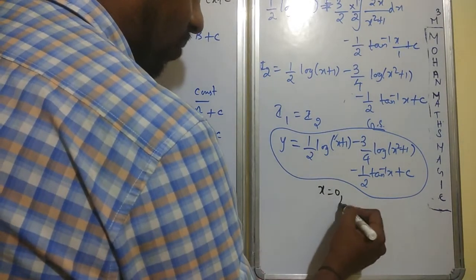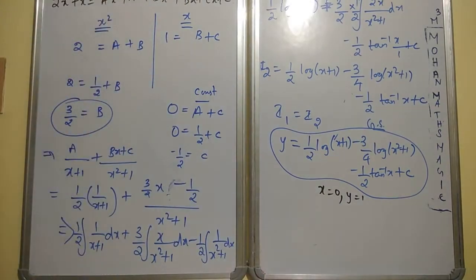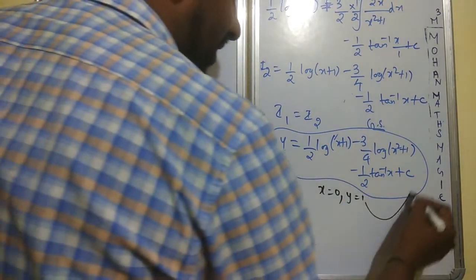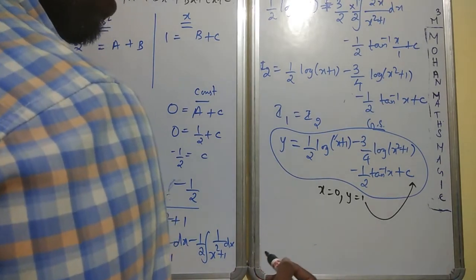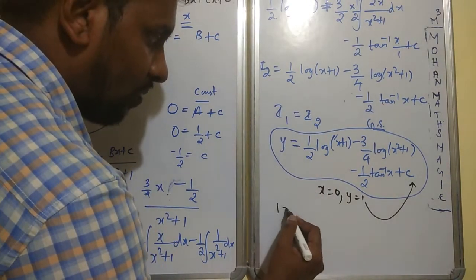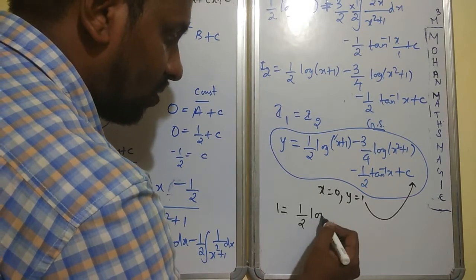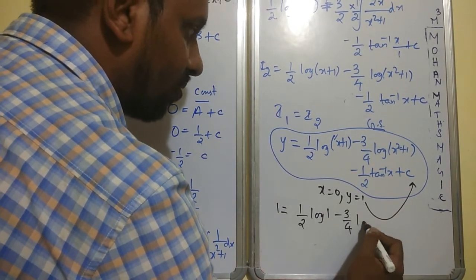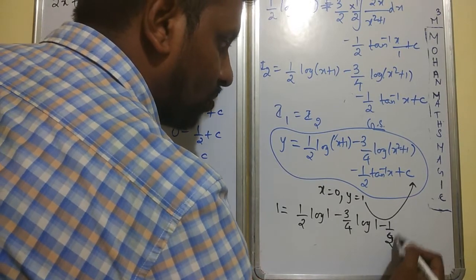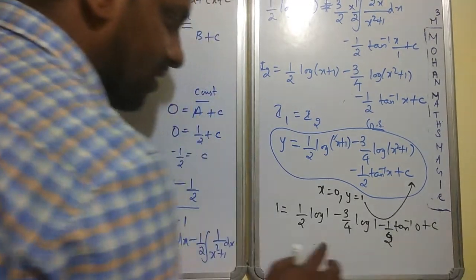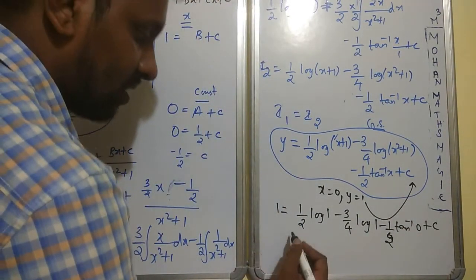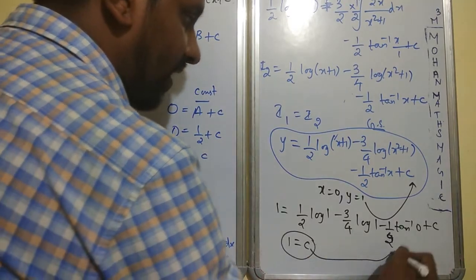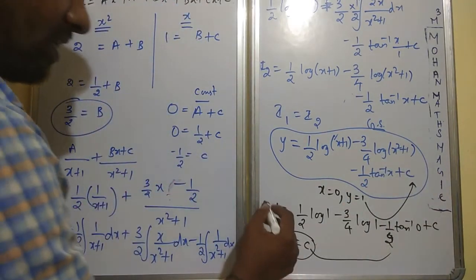Put x = 0, y = 1: 1 = (1/2)log(1) - (3/4)log(1) - (1/2)tan⁻¹(0) + C. log(1) = 0, log(1) = 0, tan⁻¹(0) = 0. Therefore 1 = C. Substitute C = 1 back. The particular solution is y = (1/2)log(x+1) - (3/4)log(x²+1) - (1/2)tan⁻¹(x) + 1.